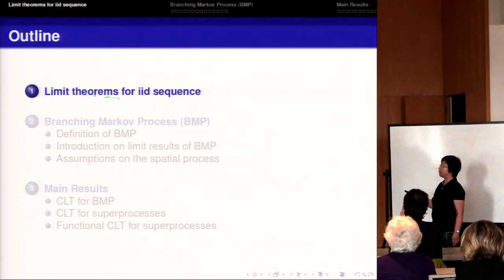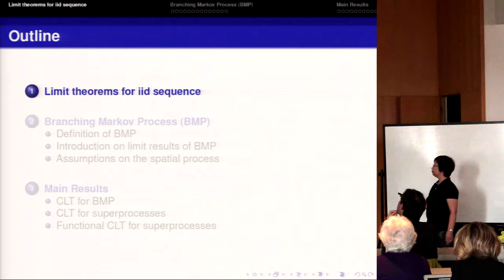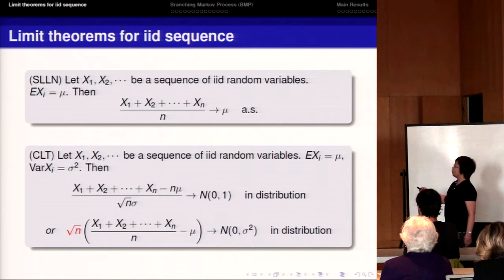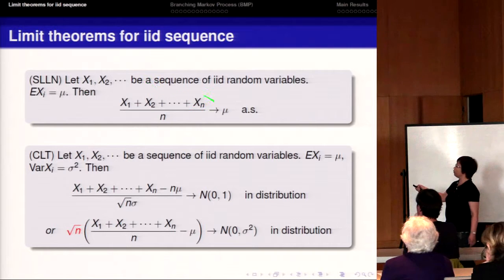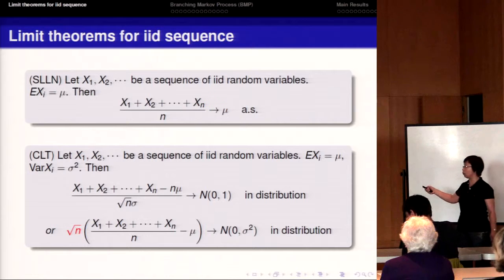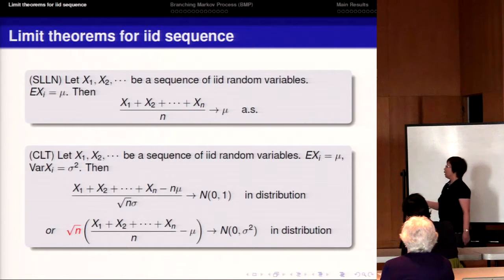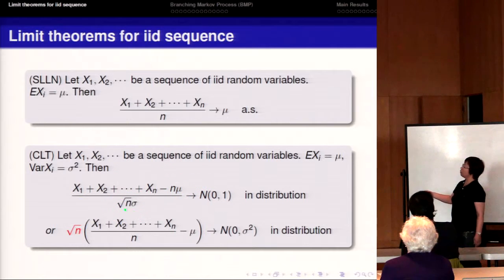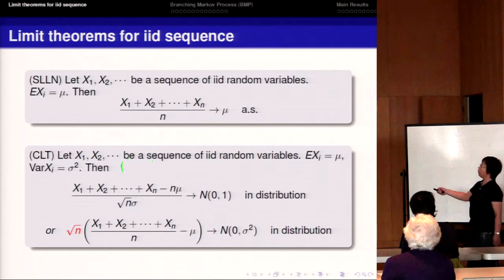Let's look at the classical limit theorem for an IID sequence. If we are given a sequence of IID random variables where mu is the mean for each x_i, the sum of the first n random variables divided by n, according to the strong law of large numbers, has limit mu almost surely.